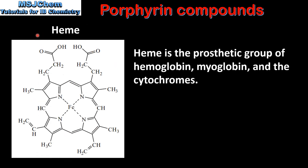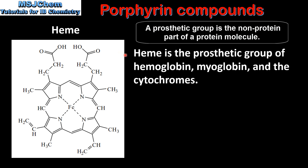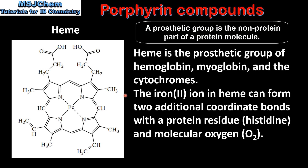Next we look at the structure of heme. Heme is the prosthetic group of hemoglobin, myoglobin and the cytochromes. The Fe²⁺ ion in heme can form two additional coordinate bonds with a protein residue and molecular oxygen.